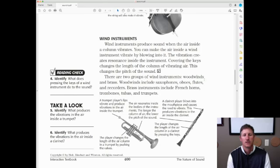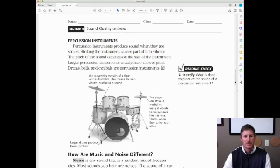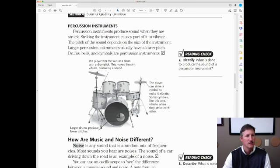Woodwinds include saxophone, oboes, flutes, and recorders. Brass instruments include French horns, trombones, tuba, and trumpets. My son plays the trombone. And then the last type of musical instrument is what I played. Actually, I played the tuba, and I also played the percussion in high school.